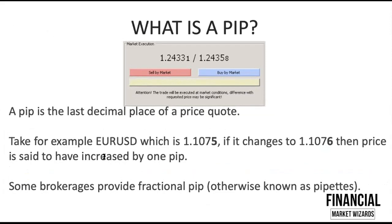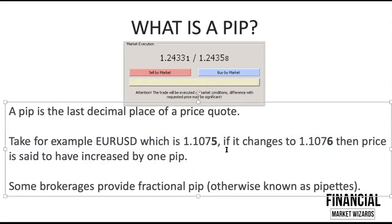The last thing we want to cover today is: what is a pip? This is fundamental and very important — you must always know what a pip is. In our channel we always say we made 20 pips, 40 pips. A pip is the last decimal place of a price quote. For example with EURUSD, let's say the quote is 1.1075. If it changes to 1.1076, then price is said to have increased by 1 pip. If it went from 1.1075 to 1.1080, that would be a 5 pip increase. It's just simple math — look at the last figure.